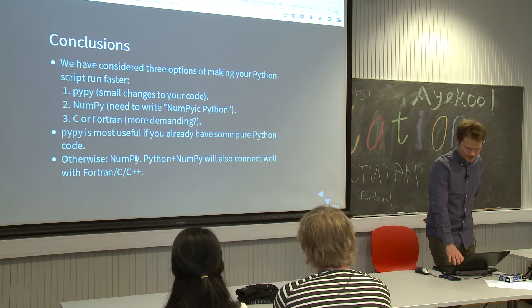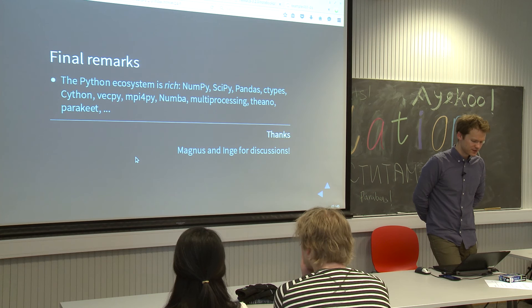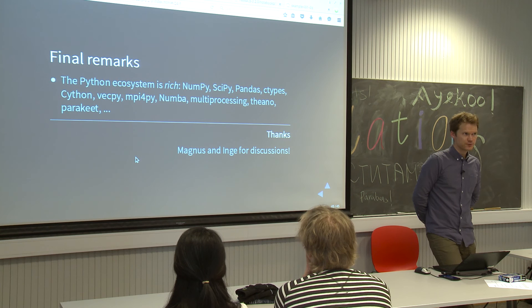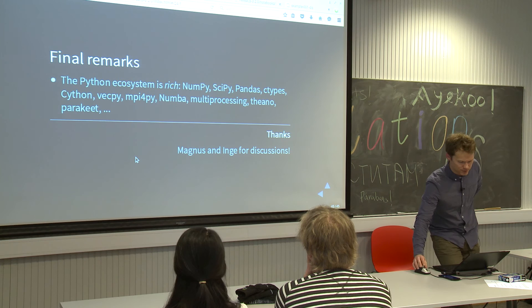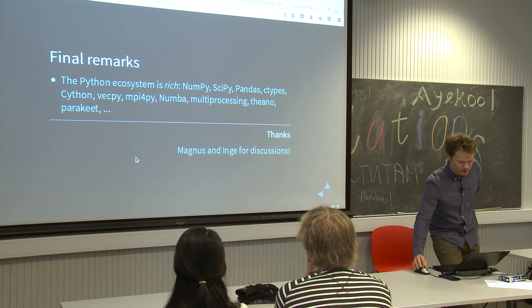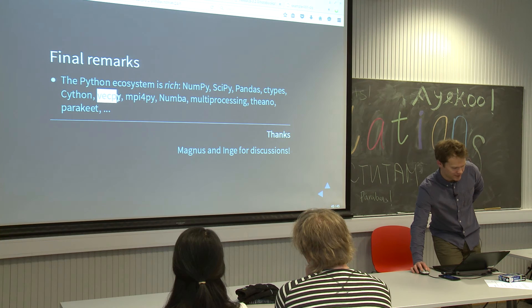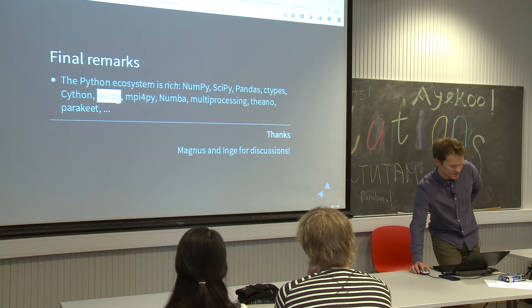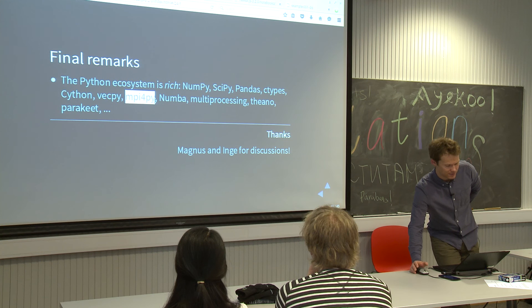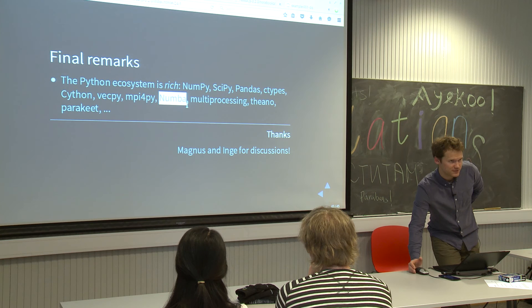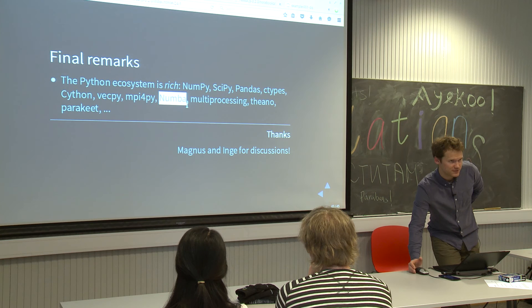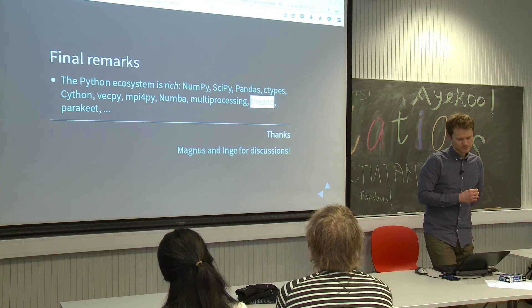Final remarks: the Python ecosystem is quite rich, and this is maybe the best reason for using Python — there are so many libraries out there doing things for you, especially for scientific computing. You have libraries for numerical methods, storing your data and accessing them, calling things from C. There are libraries that take Python code and turn it into vectorized C code. You can write things in parallel with mpi4py, have a just-in-time compiler for NumPy, do multiprocessing, and there are libraries for doing stuff on GPUs with large NumPy arrays. With that, I'd like to end — and also thank Magnus and Inge for many discussions about Python. Thank you for your attention.